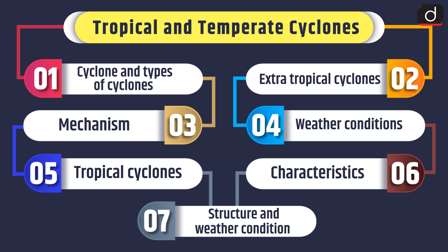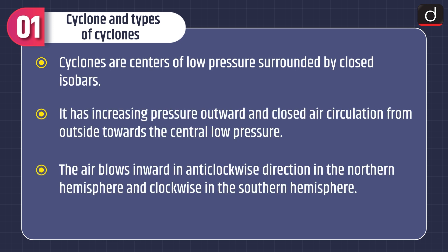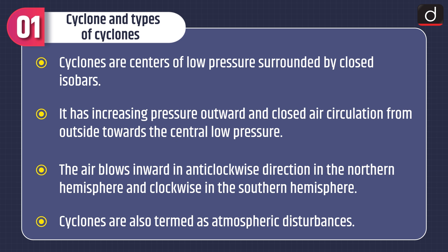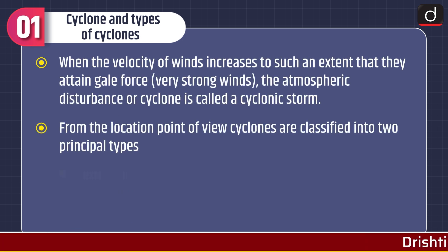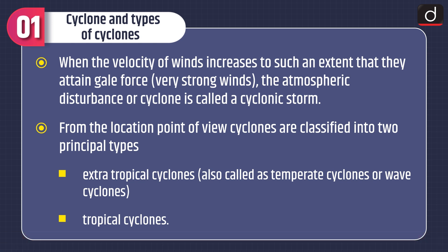First of all, let's understand what cyclones are and what the types of cyclones are. Cyclones are centers of low pressure surrounded by closed isobars, with increasing pressure outward and closed air circulation from outside towards the central low pressure. The air blows inward in an anti-clockwise direction in the northern hemisphere and clockwise in the southern hemisphere. Cyclones are also termed as atmospheric disturbances. When the velocity of winds increases to such an extent that they attain gale force, the atmospheric disturbance or cyclone is called a cyclonic storm.